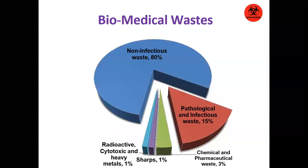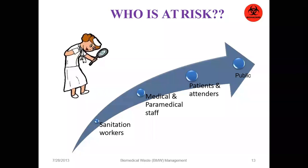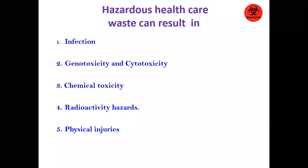These are the types of waste which can be generated: non-infectious, about 84%, and infectious. In the infectious category, we can have a whole range of classes. These are the sources — larger sources, smaller sources — whether a tertiary care hospital or just a dispensary or a daycare clinic, waste will be generated. And who is at risk? Sanitation workers, paramedical, medical staff, patients and attendants, and then the general public.